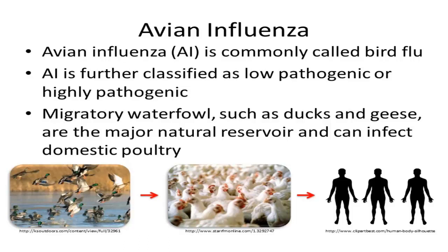The major natural reservoir for influenza A viruses is migratory waterfowl. This includes birds such as ducks and geese that are capable of traveling long distances. Waterfowl will harbor the influenza virus without showing signs of being sick, and can spread the disease to domestic poultry during their migrations.